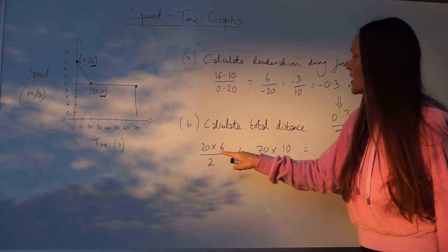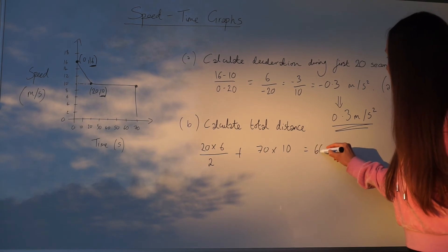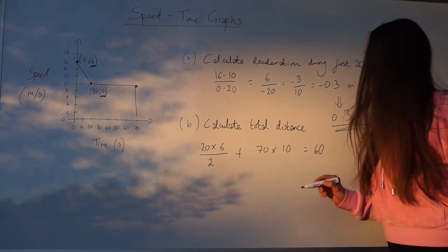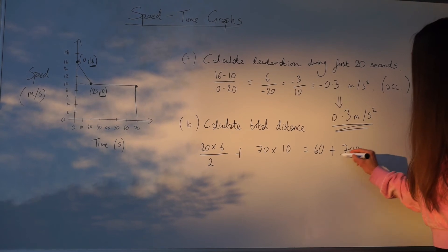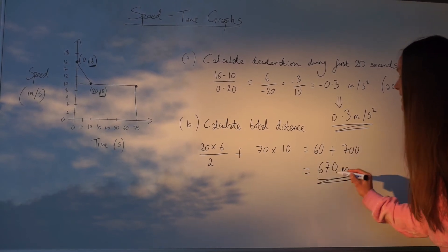So if I work that out, 20 times by 6 divided by 2 is 60. 70 multiplied by 10 is 700. And if we add those together, we get 670 metres.